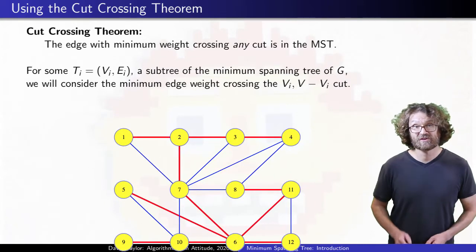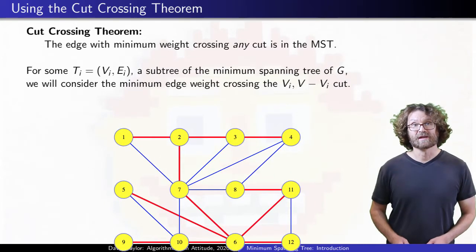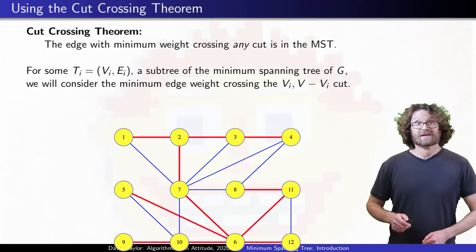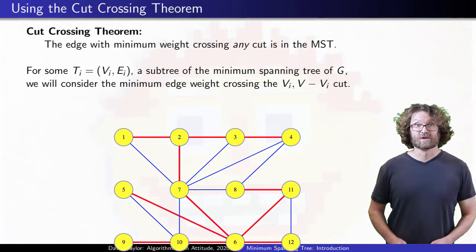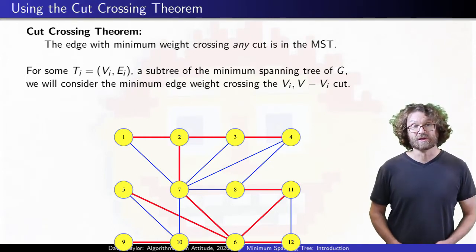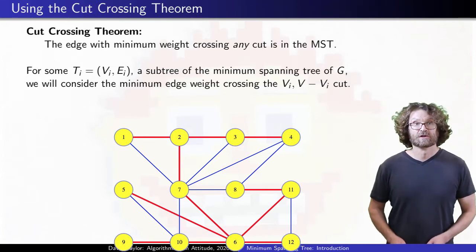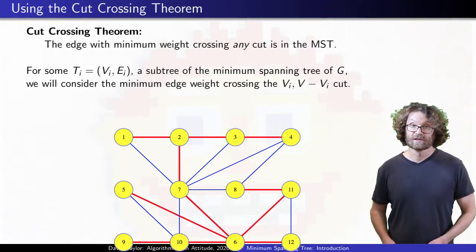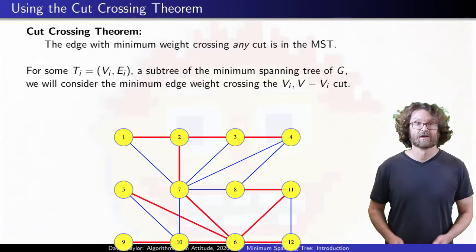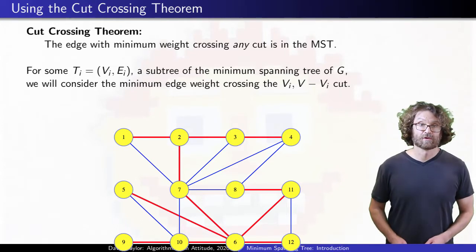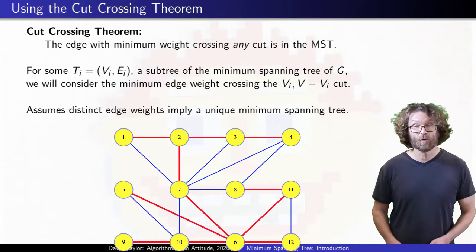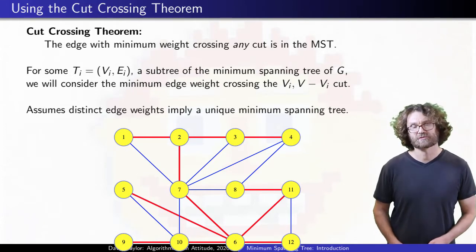There is a specific way we will use that theorem. Each cut will be between some known subtree of the minimum spanning tree, and the rest of the graph. Going from the subtree to the rest of the graph defines the cut. The way I have worded that theorem, it assumes that distinct weights force a unique spanning tree. Let's prove that.